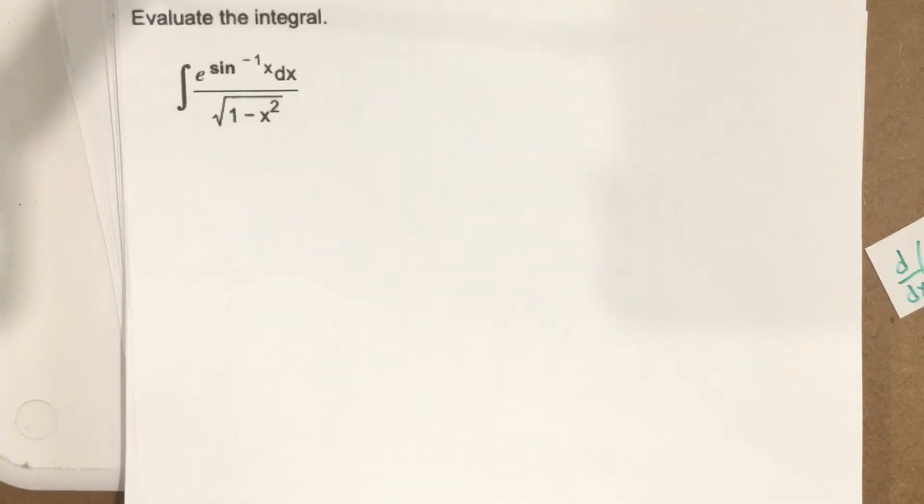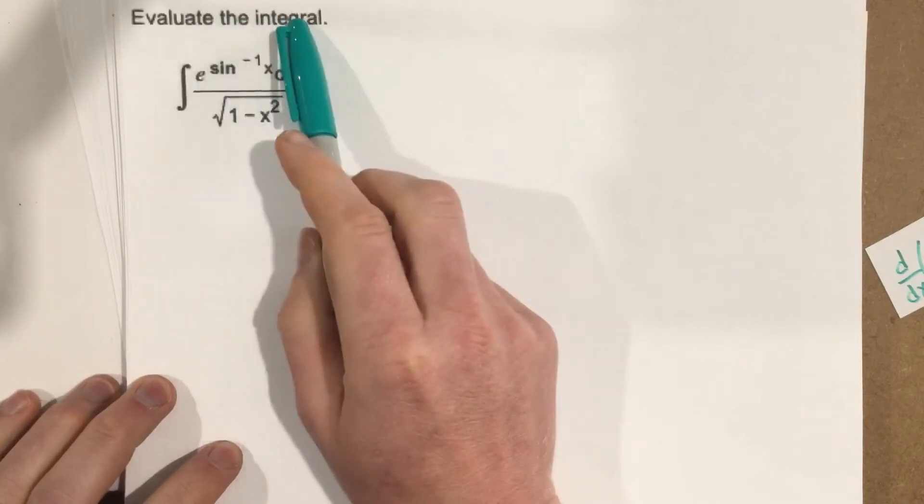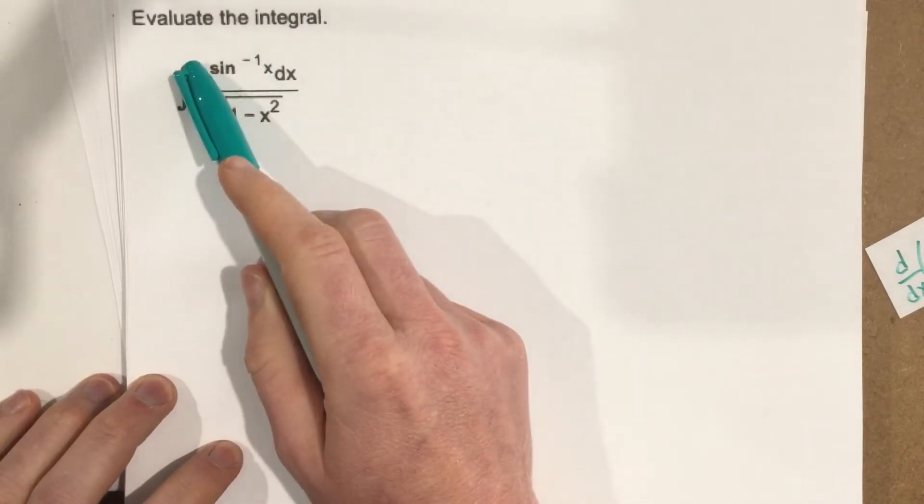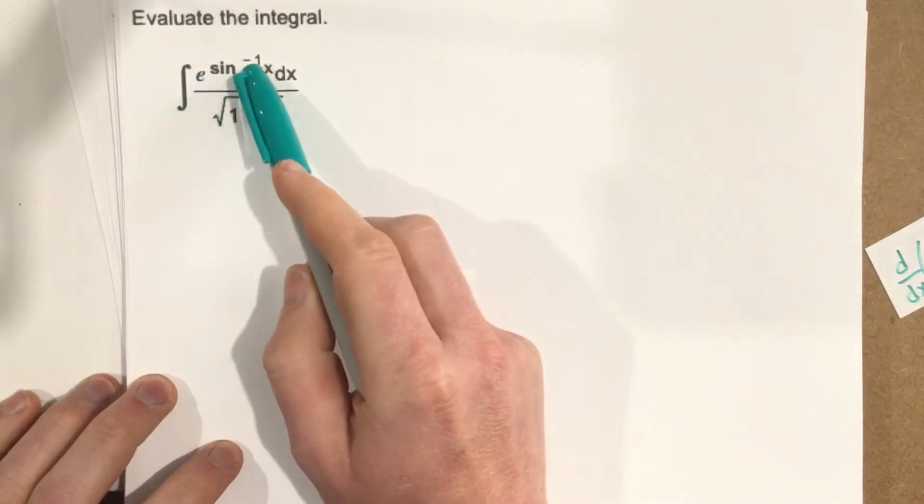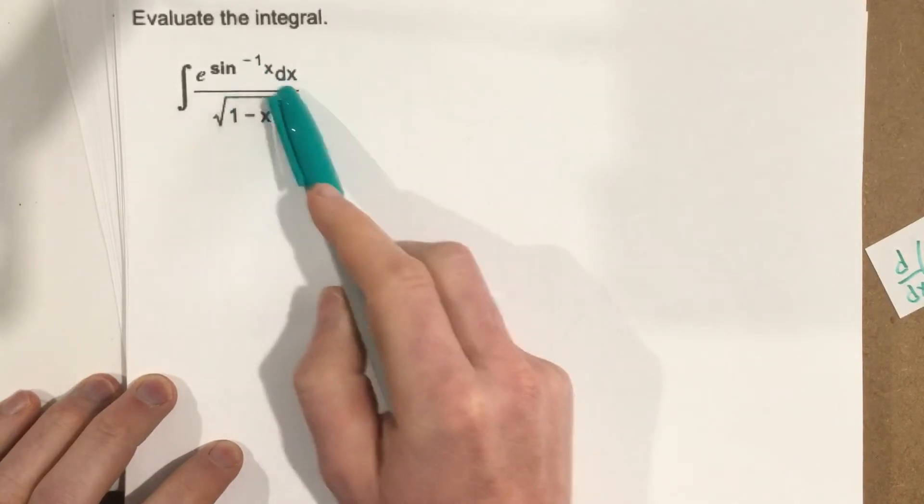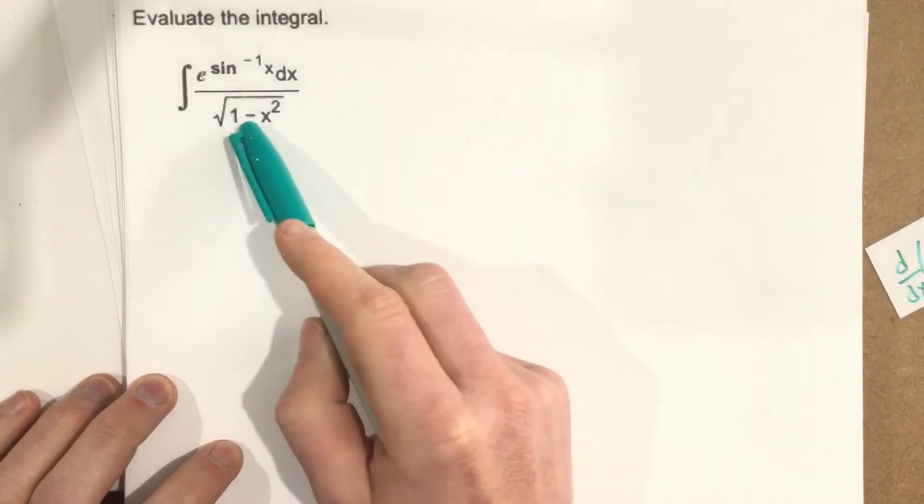This is problem number 7 from section 5.5. They want us to evaluate the integral. The integral e to the sine inverse of x dx divided by root 1 minus x squared.